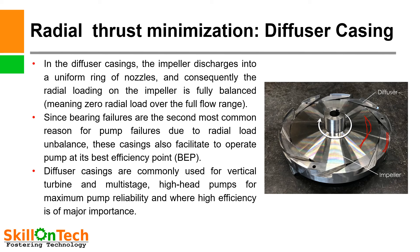As we know, bearing failures are the second most common reason for pump failures due to radial load unbalance. These casings also facilitate operating the pump at its best efficiency point (BEP). Diffuser casings are commonly used for vertical turbine and multistage high head pumps for maximum pump reliability and where high efficiency is of major importance.